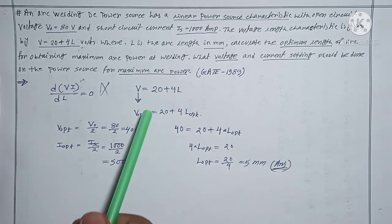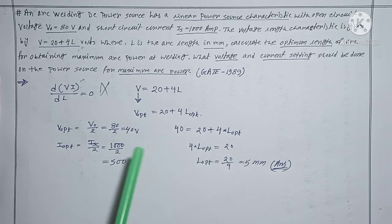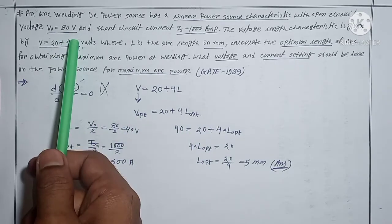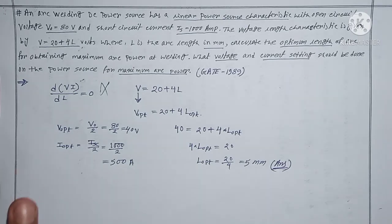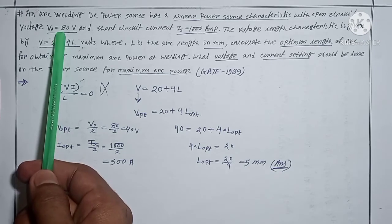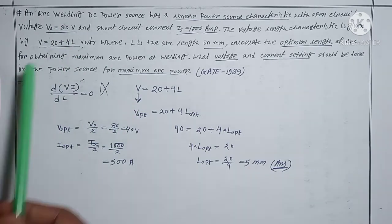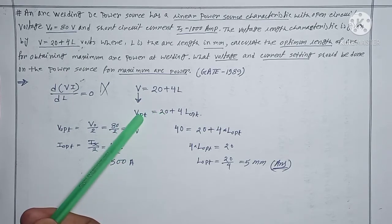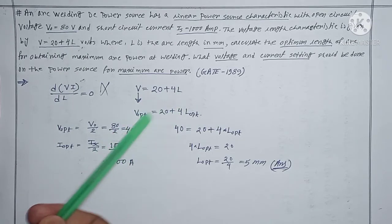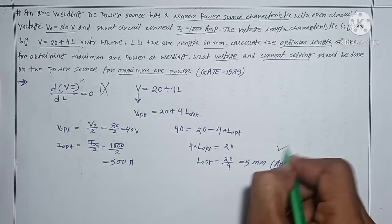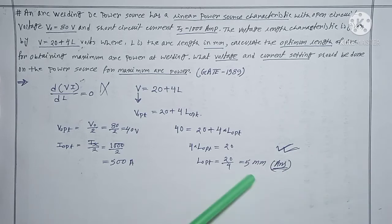For quick understanding: just by observing the question, the optimum arc length is 5 mm. Since open circuit voltage is 80 V, optimum voltage is 80/2 = 40 V. Substituting: 40 − 20 = 20, and 20/4 = 5, so optimum arc length is 5 mm. This procedure is absolutely correct.